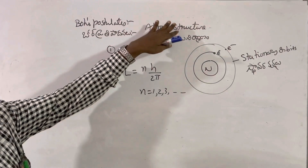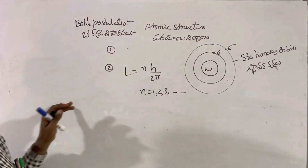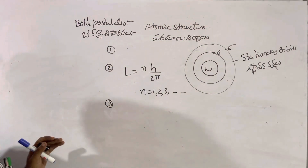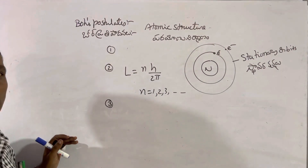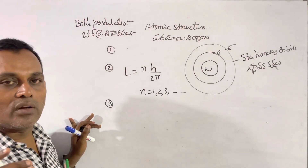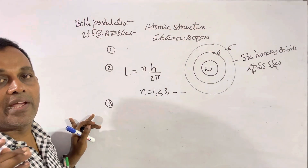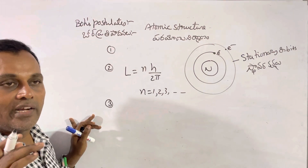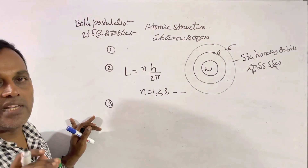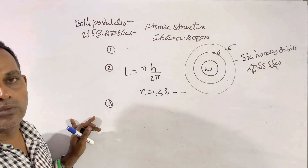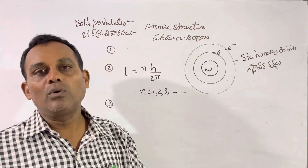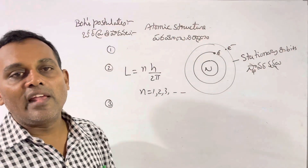The third important postulate is that the energy absorbed or emitted by an electron when it jumps from one orbit to another orbit is equal to the difference between the energies of the two orbits.